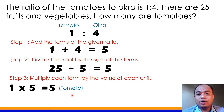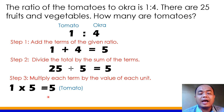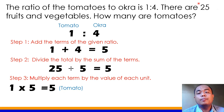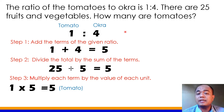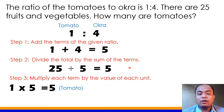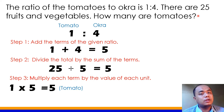To answer the problem: there are 5 tomatoes in all out of 25 fruits and vegetables. Kung gusto mo namang i-solve yung okra, i-multiply mo ang 4 by 5, magiging 20. So may 5 na tomato at 20 na okra. 20 plus 5 equals 25 — para masiguro mong tama ang sagot.